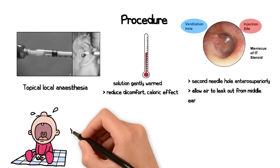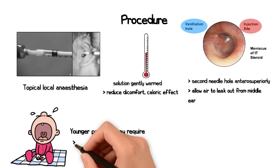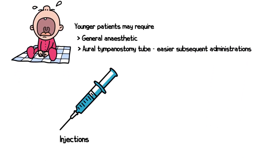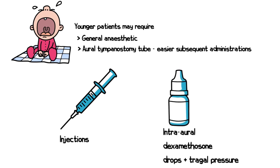Younger patients may require general anaesthetic, and so placing a tympanostomy tube allows for easier subsequent administrations, either through injection or by using dexamethasone ear drops and applying tragal pressure multiple times a day.